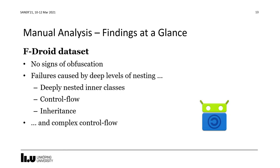To quickly summarize the most important findings: for the F-Droid dataset — the open source apps — we did not find any signs of obfuscation, which is relatively unsurprising. Failures in this case were instead caused by deep levels of nesting of various kinds, such as deeply nested inner classes wrapped in other inner classes, deeply nested control flow, deeply nested inheritance relationships, and complex control flow in general.